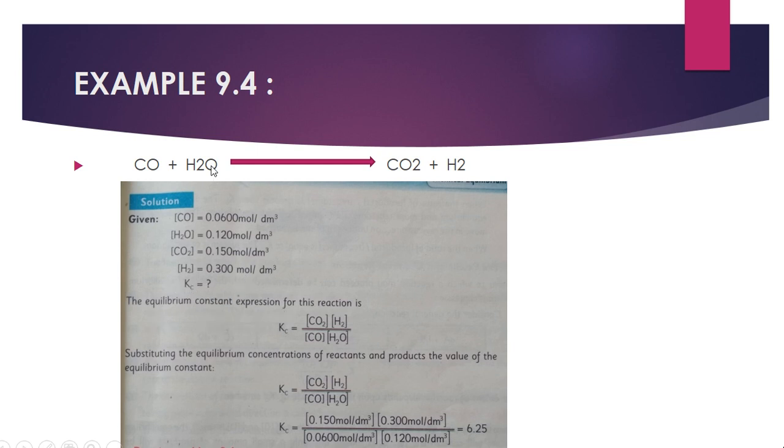The equilibrium constant expression. So keeping this equation in mind, you have to first make the equilibrium expression. So that is CO2 and H2 are products. That will be in numerator and the reactants will be in the denominator. Now, the values are given. Just put those values in the square brackets.